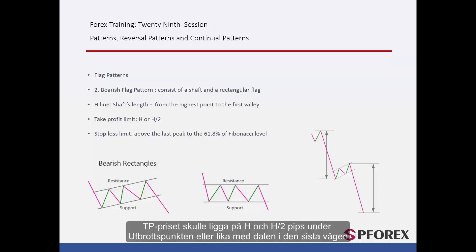TP price would be H and H2 pips below a breakout point or a valley of the last wave, while SL can be between the peak of the last wave and the 61.8% level of the Fibonacci drawn on H.